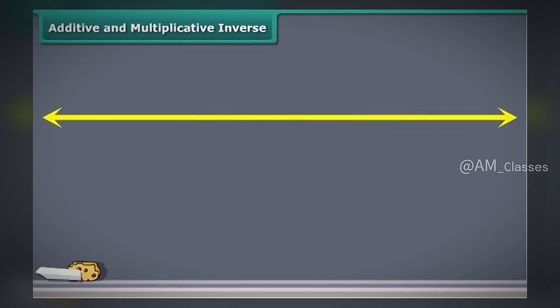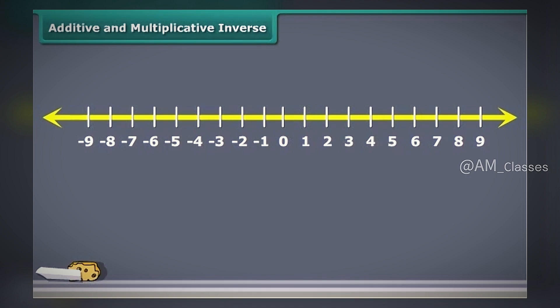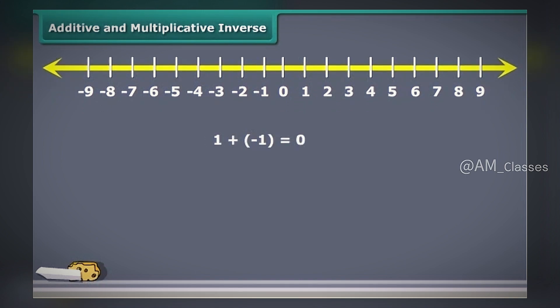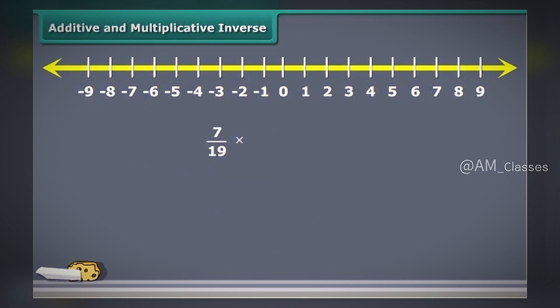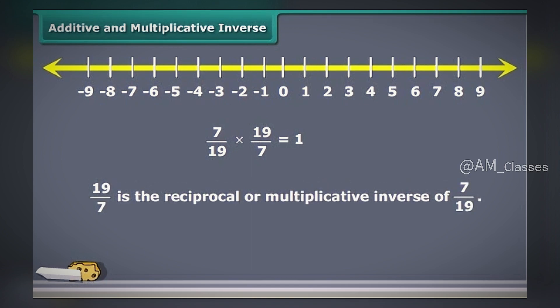You may have come across negative numbers while studying, isn't it? Is minus 1 the negative of 1? Yes. It is because 1 plus minus 1 equals 0. So we say that minus 1 is the negative or additive inverse of 1. Likewise, for any rational number, say 3 by 7, minus 3 by 7 will be its additive inverse. Just think, by which rational number would we multiply 7 by 19 to get the product of 1? Obviously, it's 19 by 7 so as to get the product 1. So we say that 19 by 7 is the reciprocal or multiplicative inverse of 7 by 19.